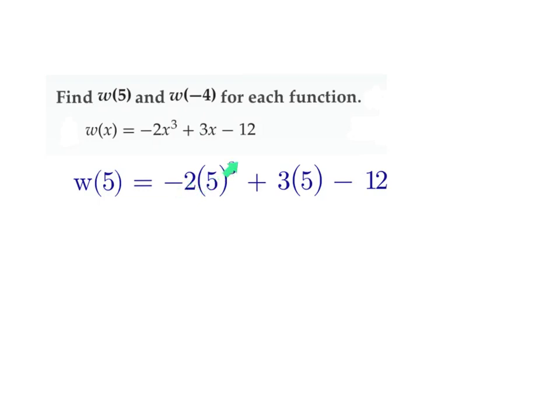So what is 5 to the third? 125 times -2 gives me -250. That's 15, still have my -12. So again, this is 125 times -2, then I just add these together. So this ends up giving me -247. How many have that? Very good.